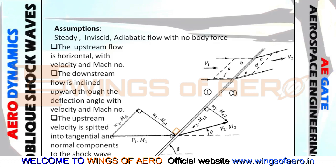Observe the figure carefully. Normal means this is the shock wave, and from the shock wave this is an imaginary velocity triangle we have taken. From here it is 90 degrees, and from this downstream section the normal is taken at 90 degrees from the shock wave.